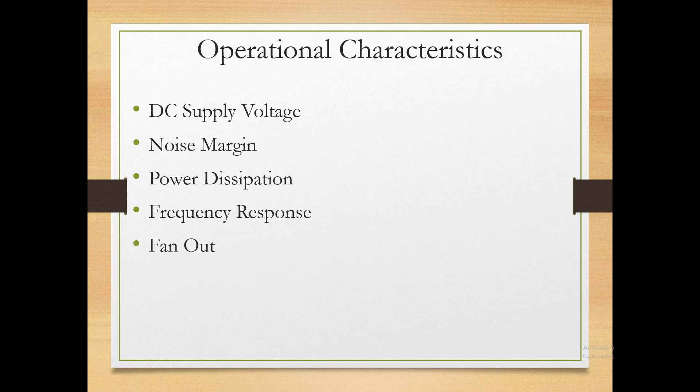Noise margin is the working region of an IC. The DC supply voltage is the power requirement — some ICs use 3.3 volts, some use 5 volts, and some use 12 volts. These DC supply voltages differ for different technologies.